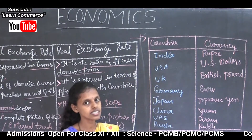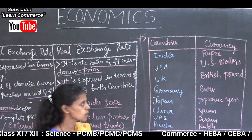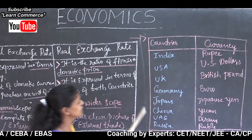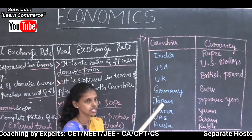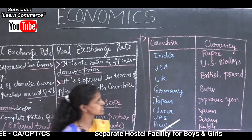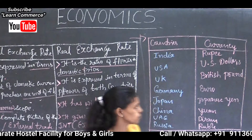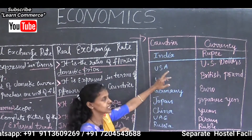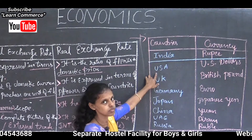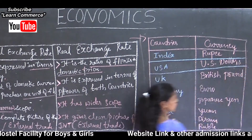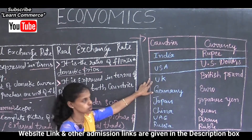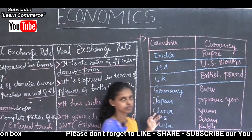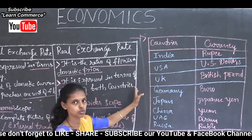Next, let us see the different countries and their currencies — very important for FIMACs, as project-oriented questions may come. India's currency is the Indian Rupee. USA — United States of America — uses the US Dollar. UK — United Kingdom — uses the British Pound, which is the currency used to exchange goods and services in the UK.